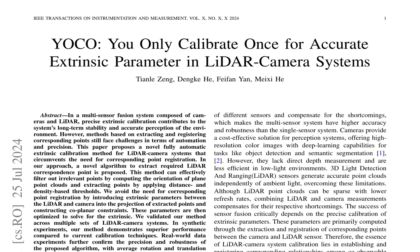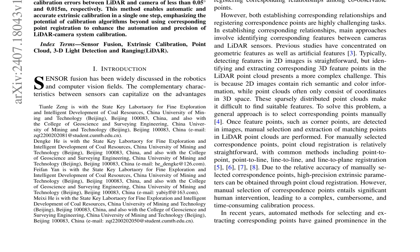Extrinsic parameters between the LiDAR and camera are introduced into the projection of extracted points and constructed coplanar constraints. These constraints are then optimized to solve for the extrinsic parameters, enabling the calibration of the LiDAR camera system. The method has been validated across multiple sets of LiDAR camera systems, demonstrating superior performance compared to current calibration techniques in synthetic experiments. Real-world data experiments further confirm the precision and robustness of the proposed algorithm.